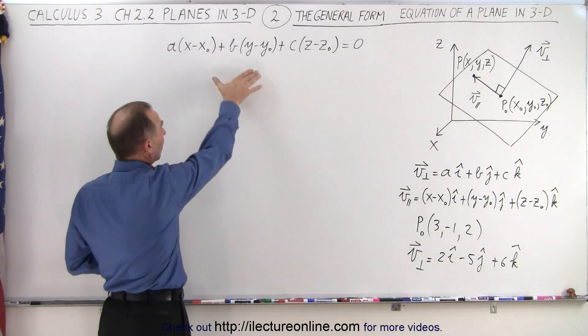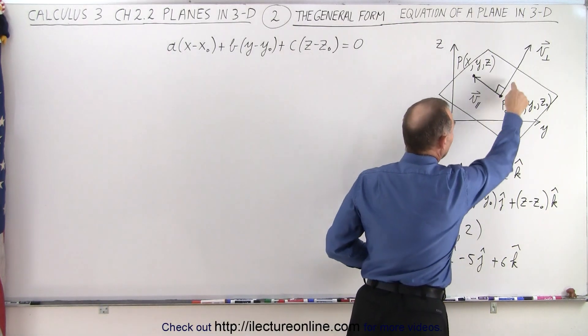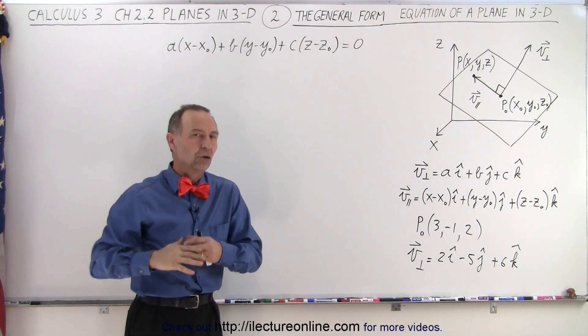So here we're going to start out with a point-normal form, for which you need a single point on the plane and a normal vector to the plane. And then we're going to transform that to the general form.